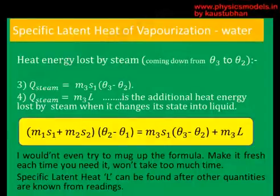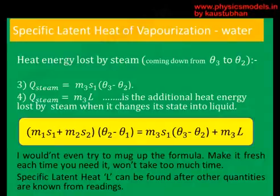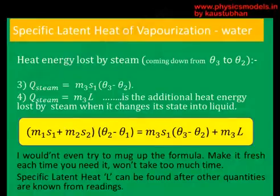The heat energy lost by steam is divided into two parts. The first part is: mass of steam times specific heat — which is the same as water — times the amount of temperature the steam lost, which is (θ3 − θ2). Please remember that the specific heat of steam is the same as the specific heat of water, since the material hasn't changed.